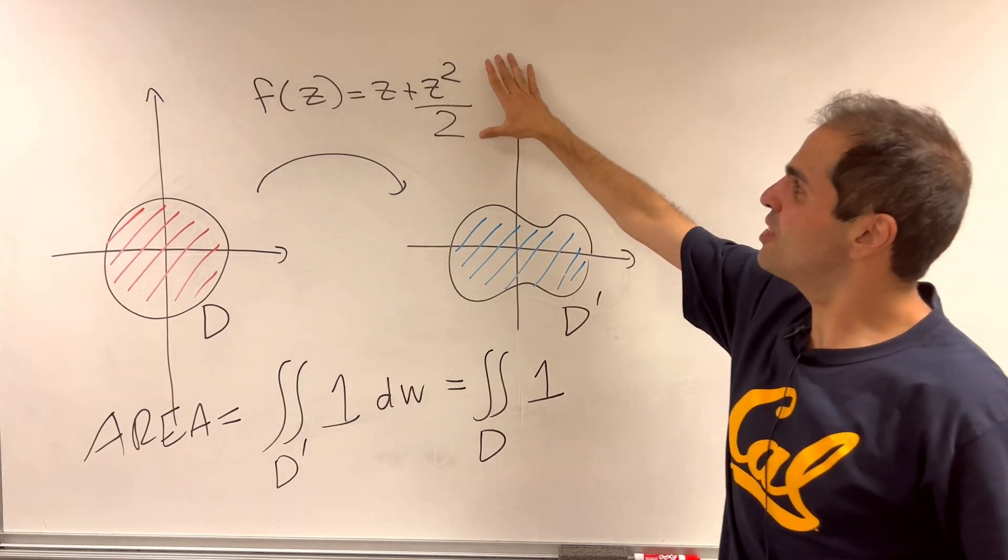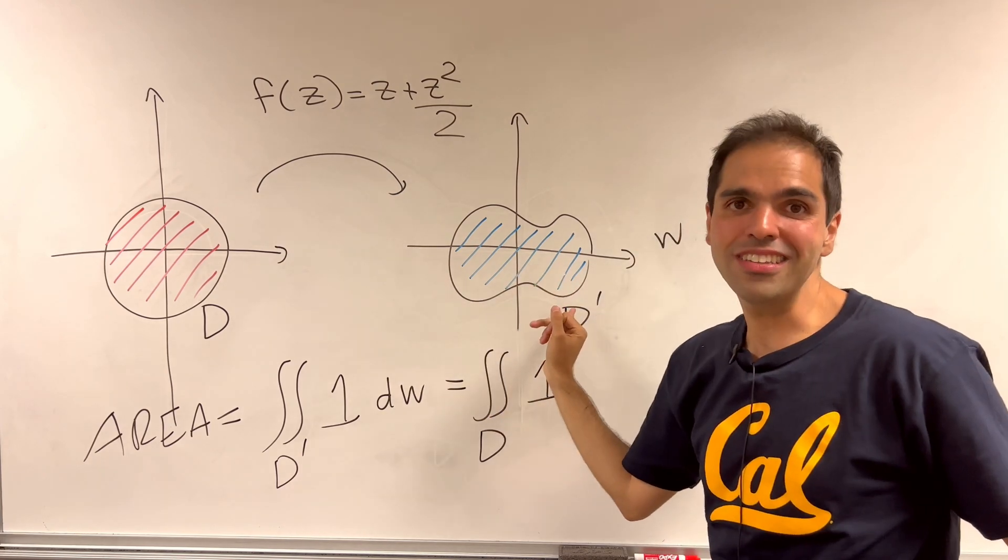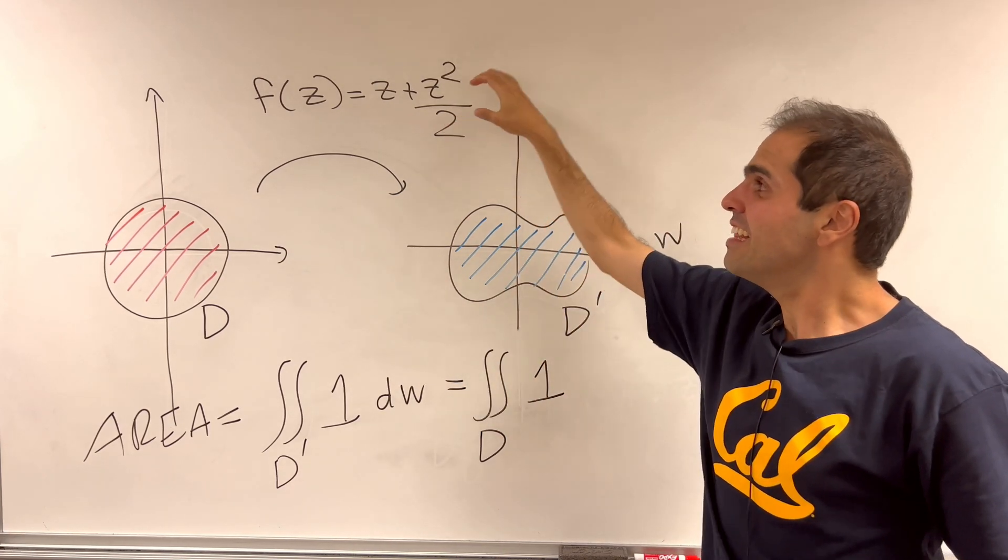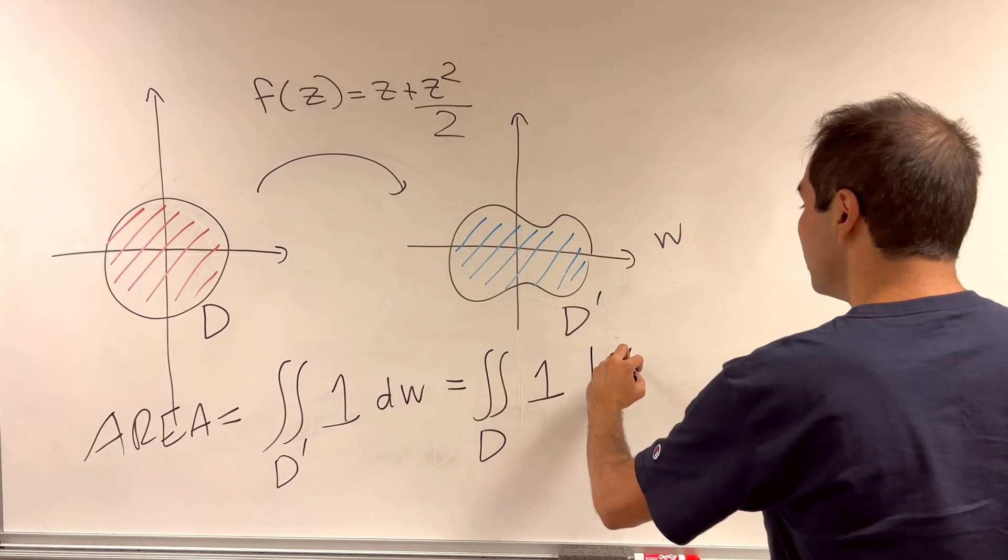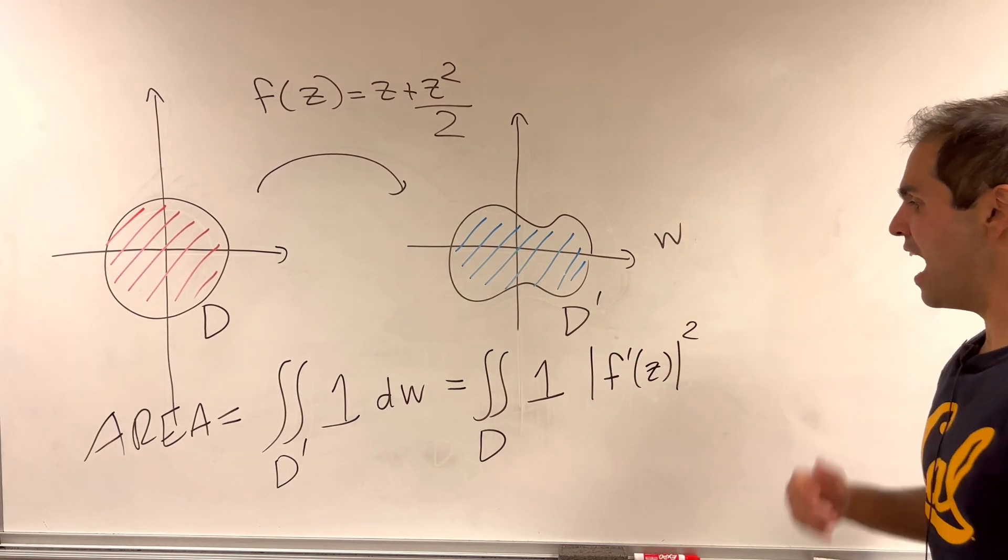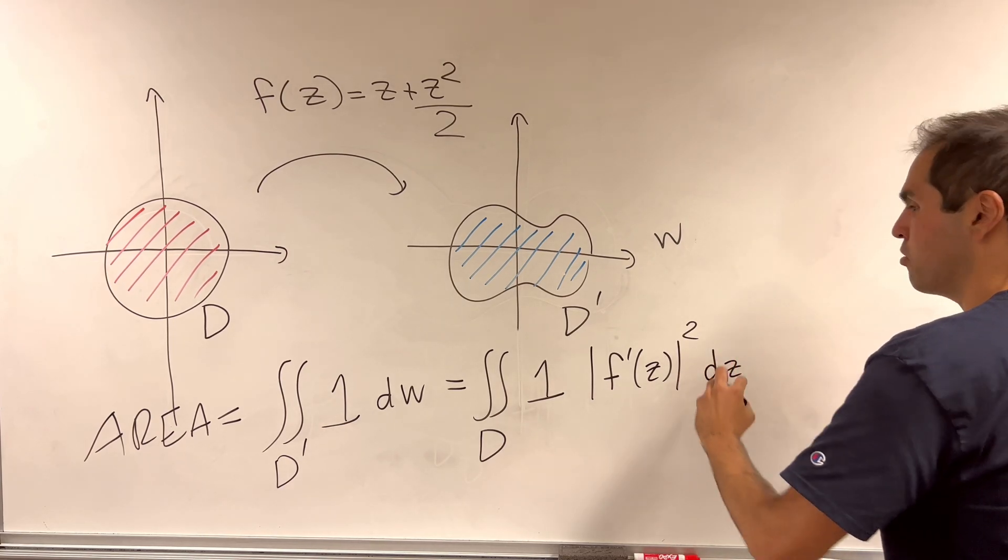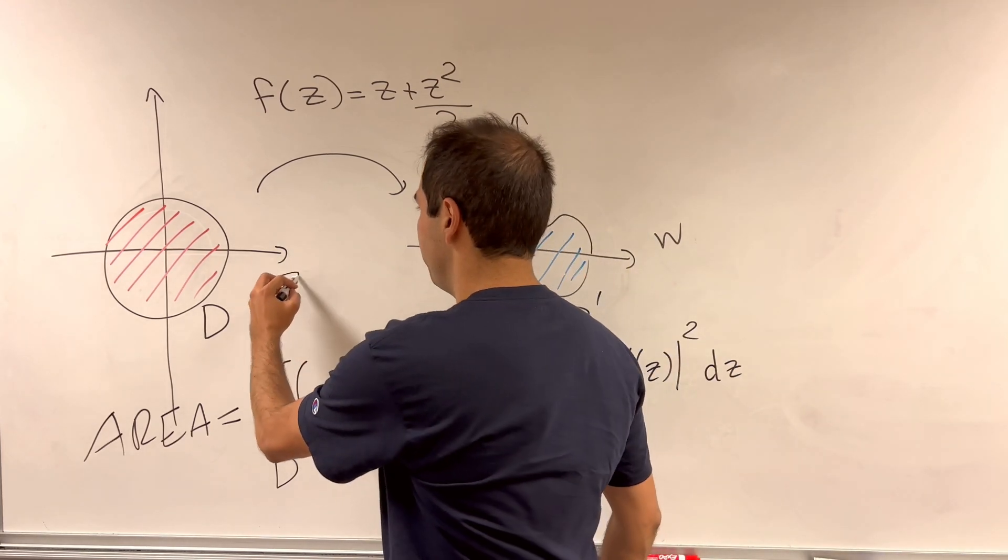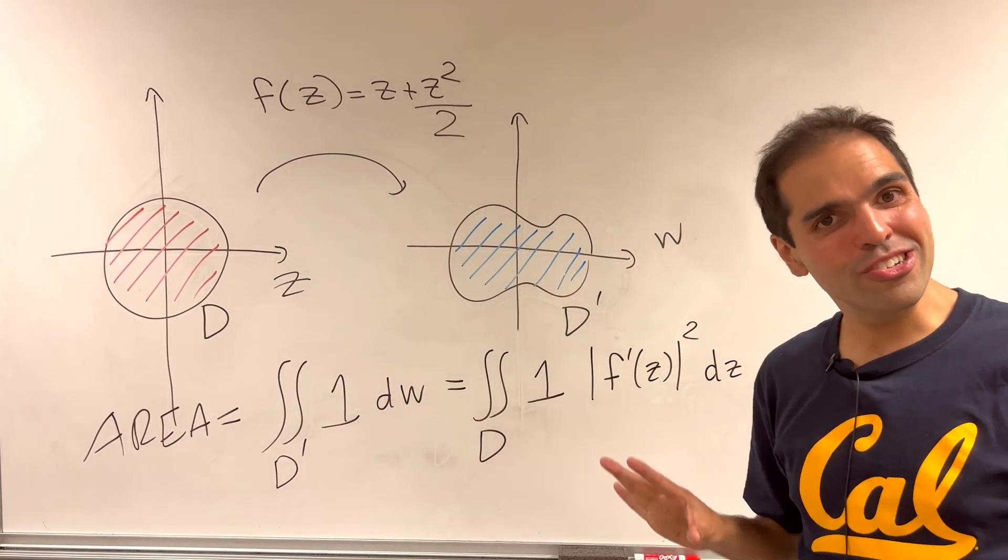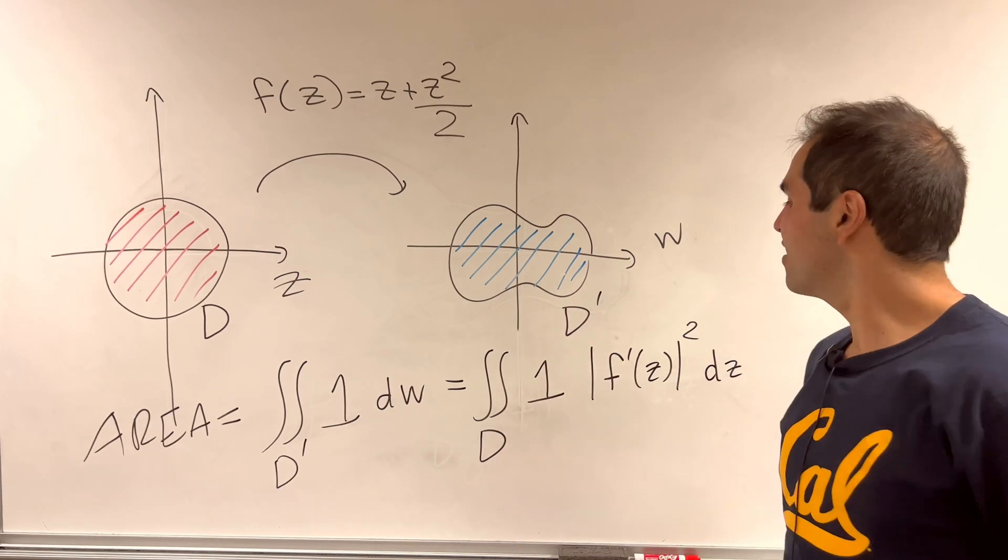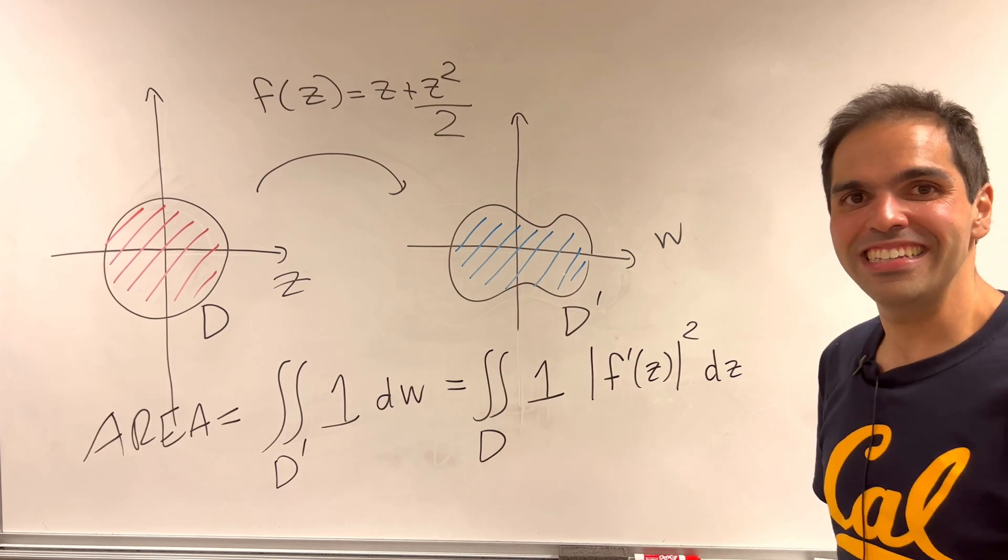But it turns out if you have a holomorphic function from one to the other, then the Jacobian is just the length of the derivative squared. So absolute value of f prime z squared with respect to the variable z. And this really cool fact I will show at the end. But for right now, let's do the cooler thing, which is to calculate the area.